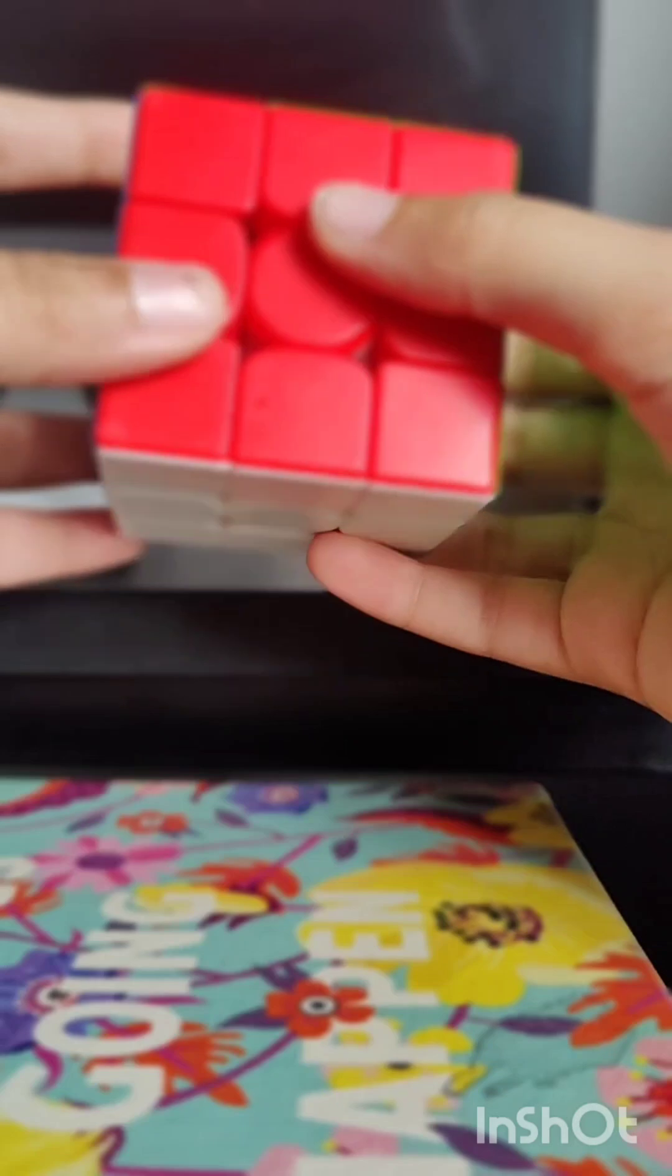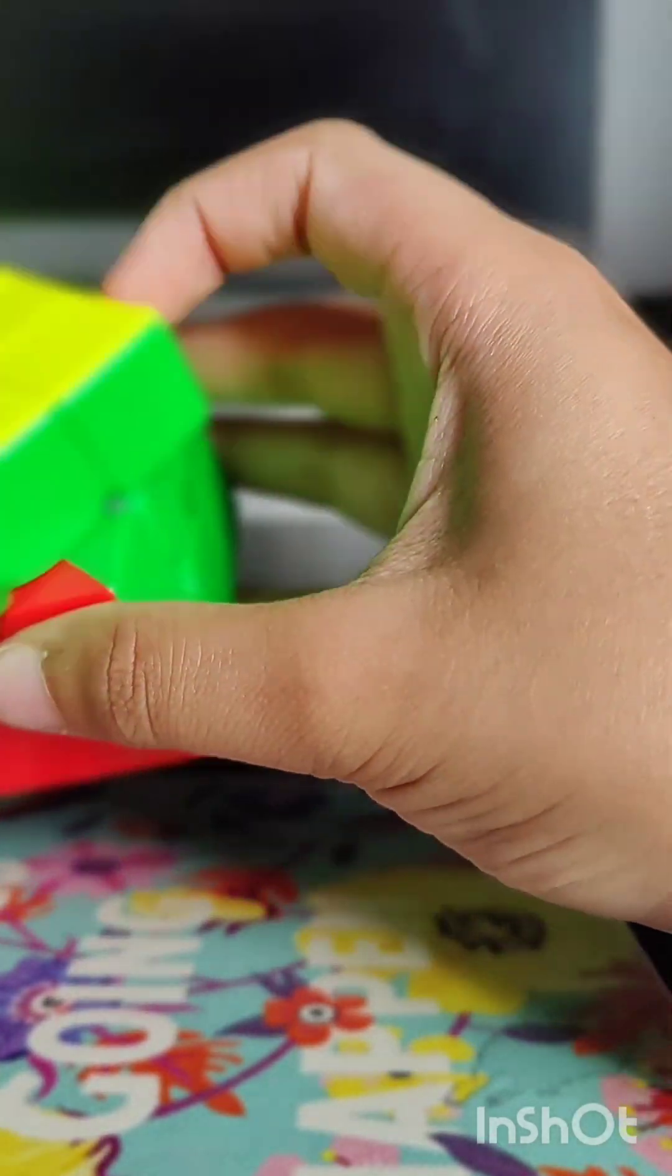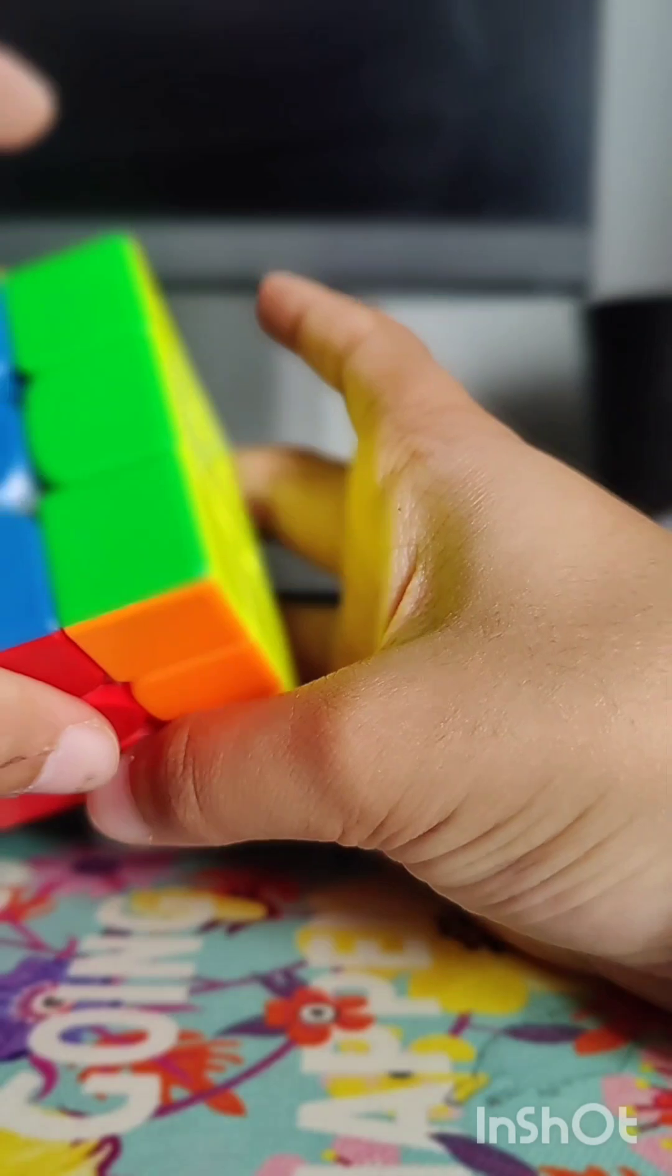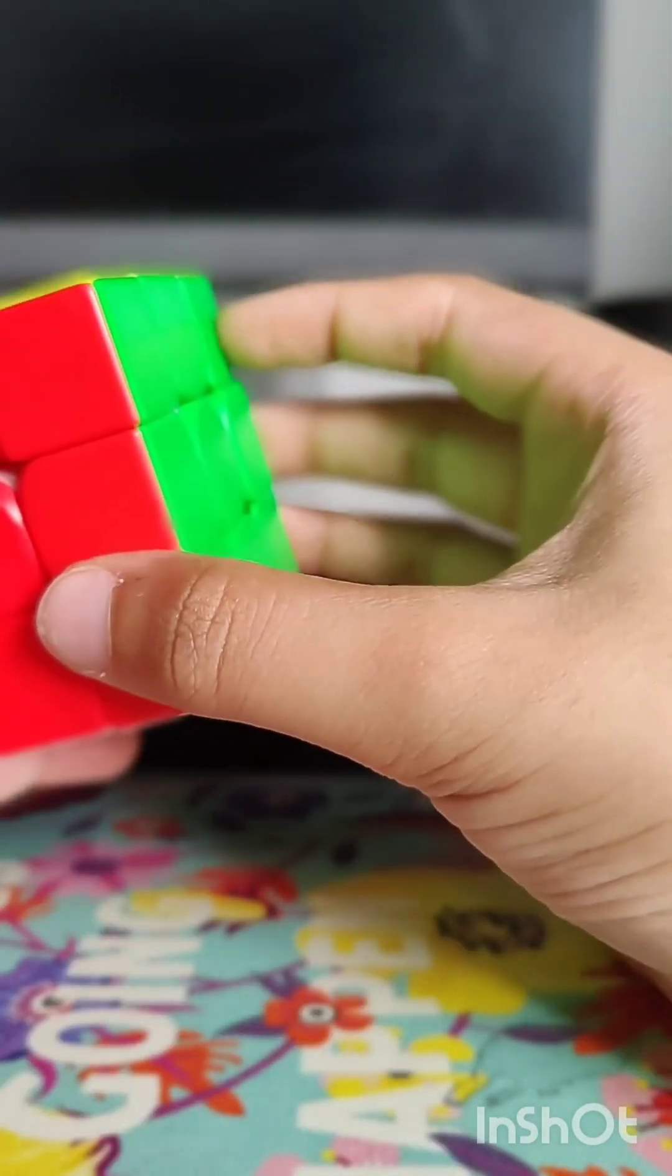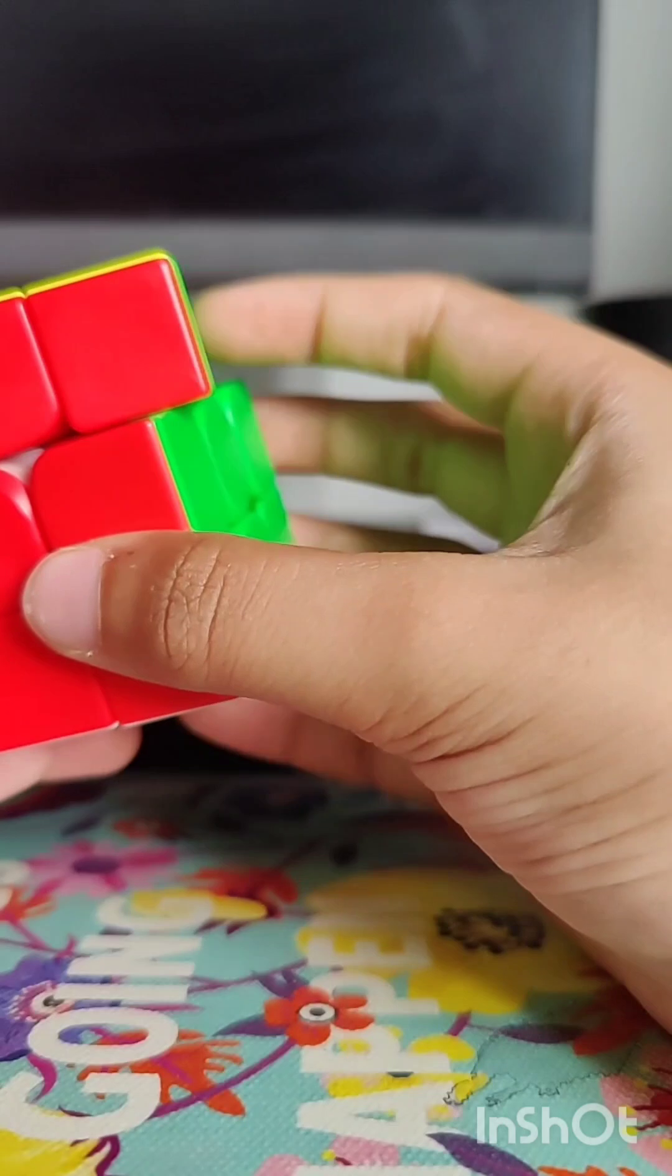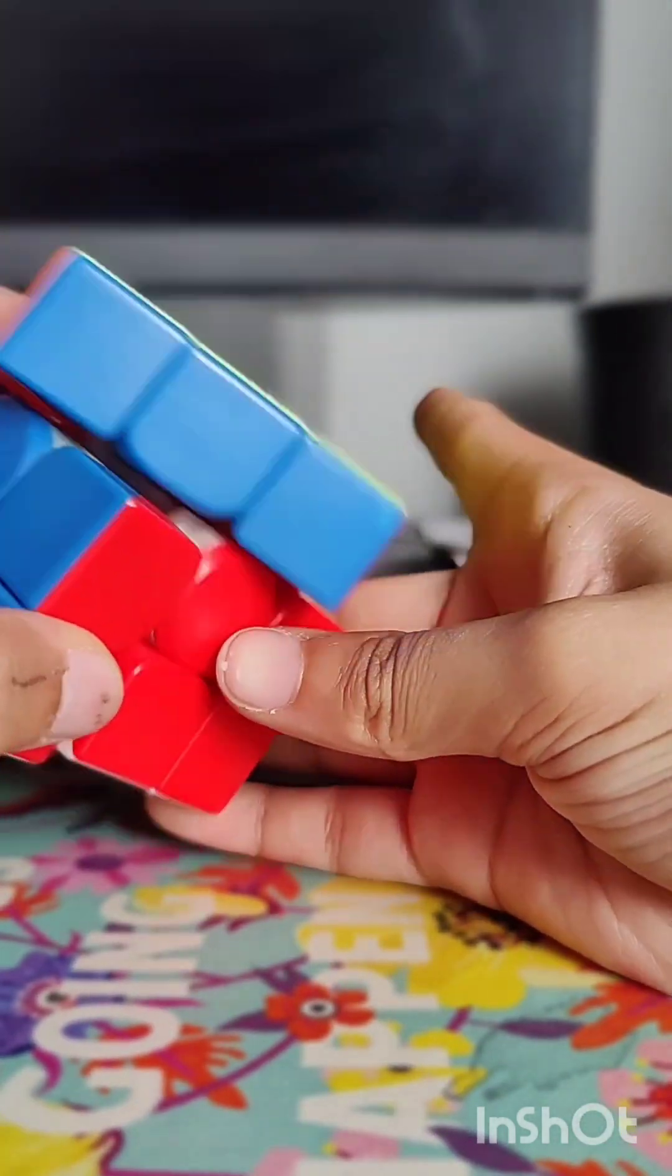For left hand turns, also you can do that. For up layer turns, you can use your index like this. But for the pushes, you can do this—move it in the front, push here, same push.